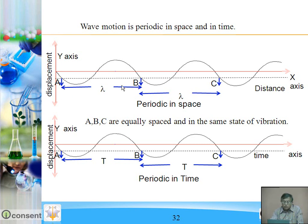The distance between two consecutive points in the same phase is known as wavelength, that is lambda. This distance is constant, and therefore wave motion is periodic in space.